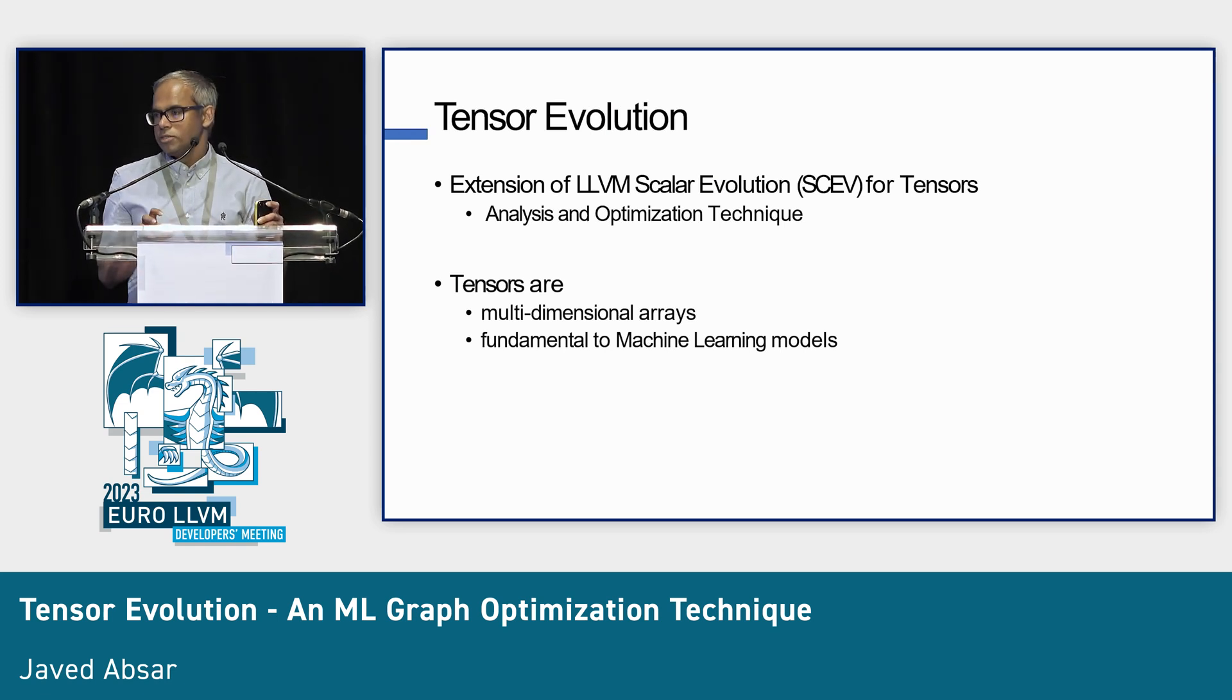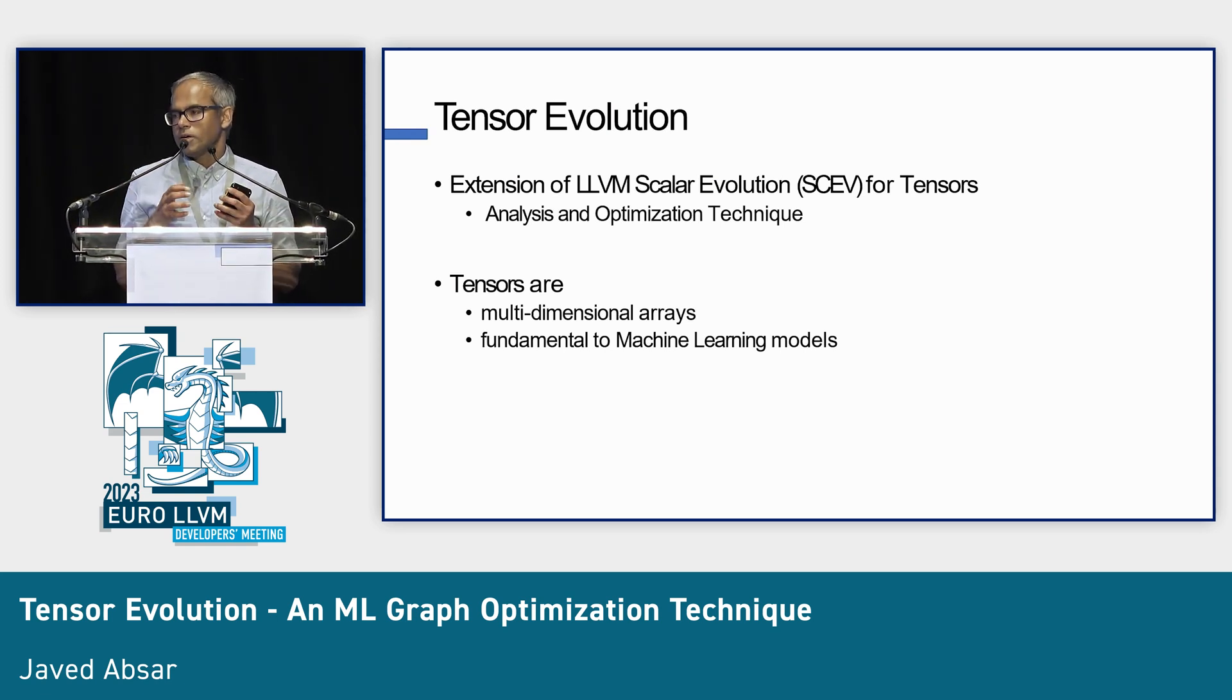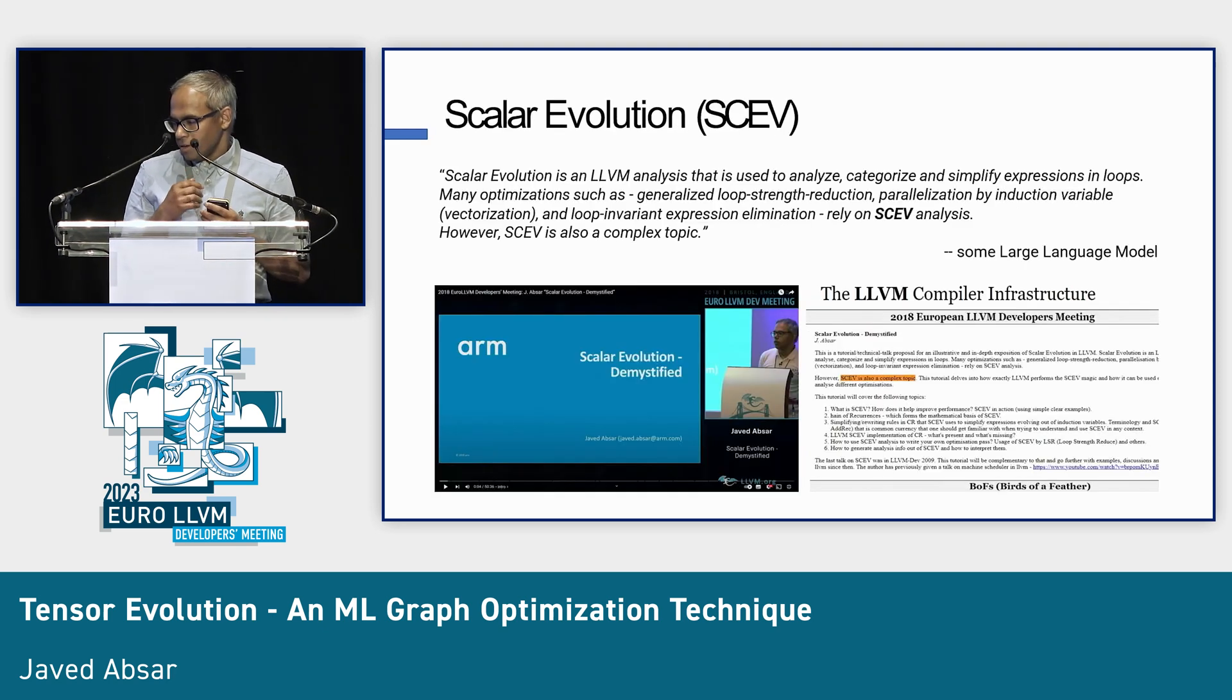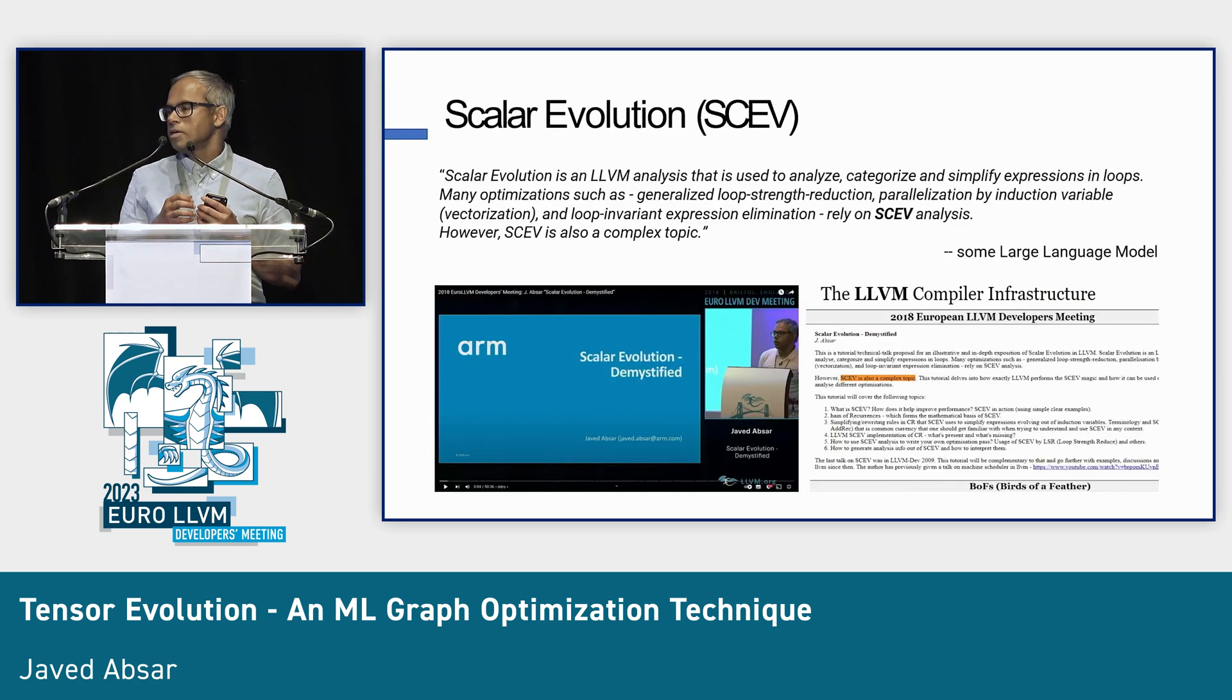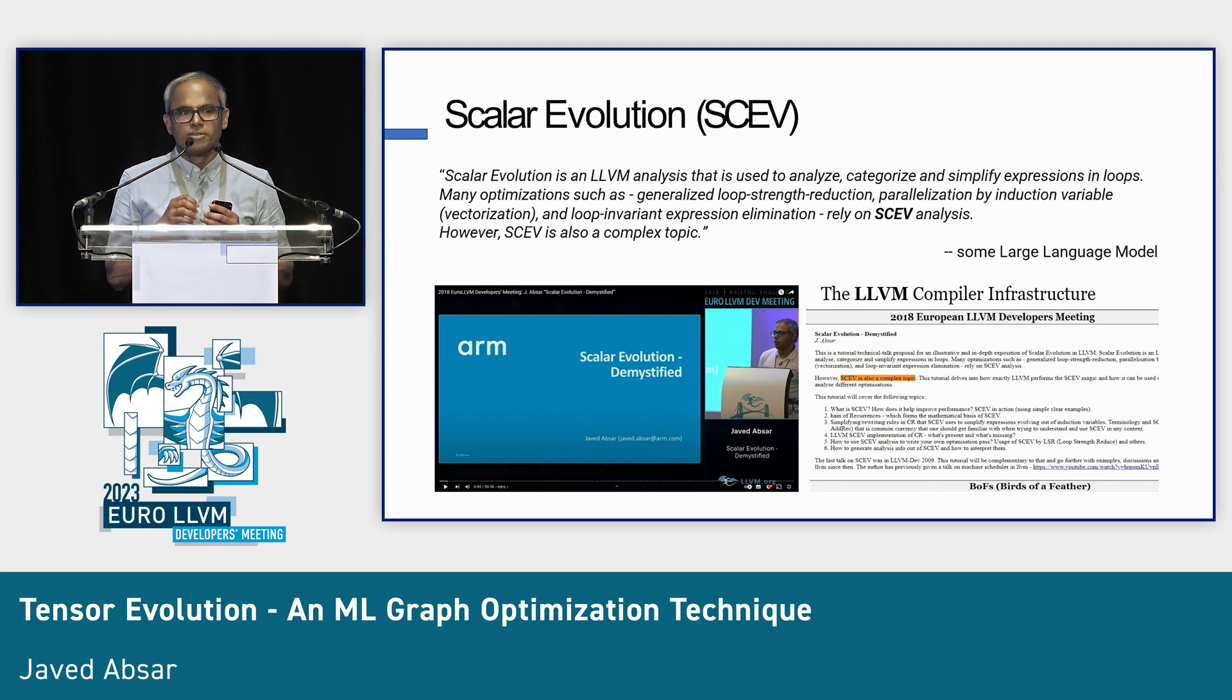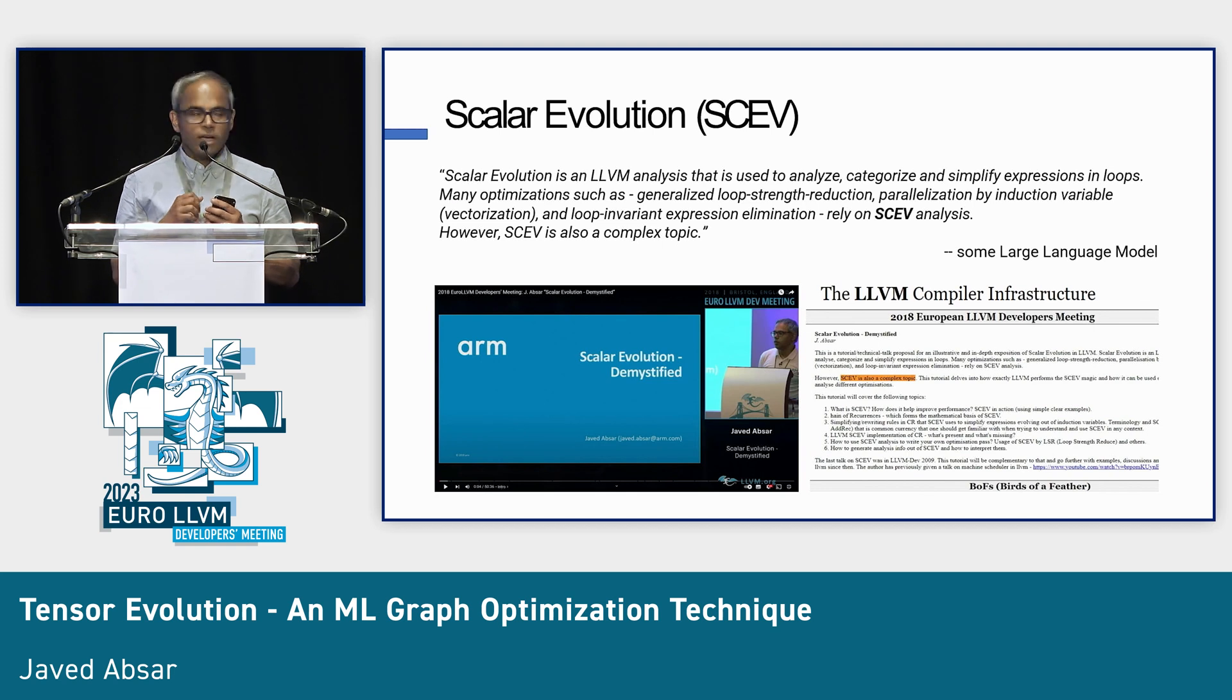Tensor evolution is an extension of what you already know, the LLVM scalar evolution. Scalar evolution was for scalars, and this extends it to tensors. Tensors are multidimensional arrays, and they're quite fundamental to machine model implementation. Because we say tensor evolution extends scalar evolution, a quick recap on what it is. Like anybody else these days, I typed into a large language model and asked what it is, and this is what it said.